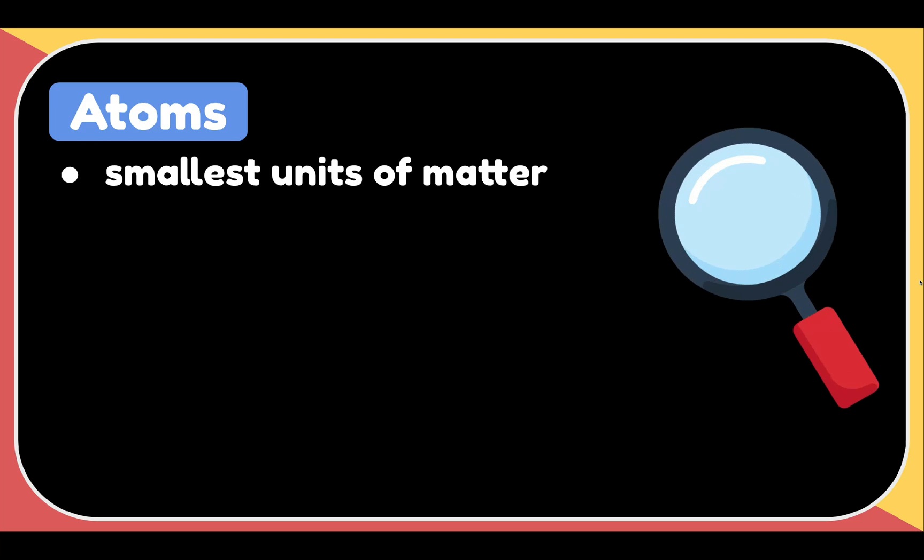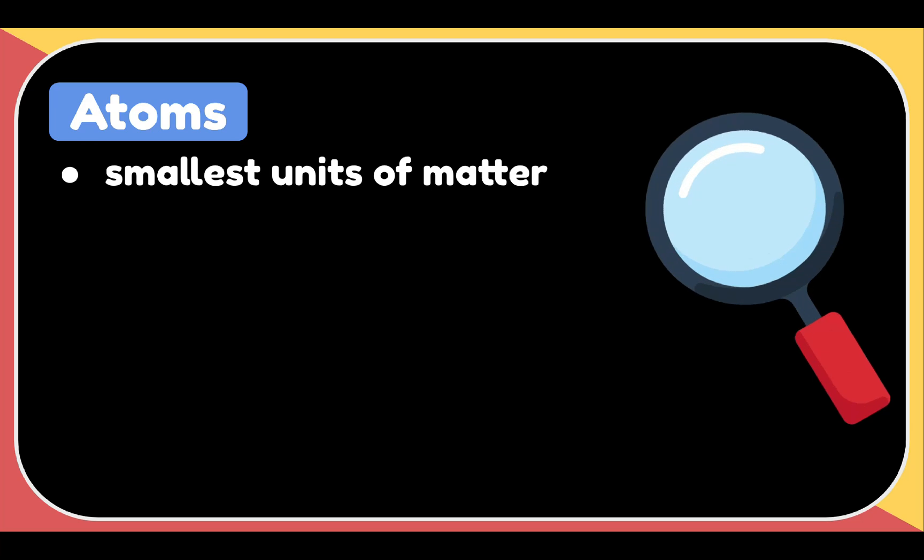So what are atoms? Atoms are the smallest units of matter that have the properties of a chemical element. Atoms are so small that you cannot see them with your eyes or even through standard laboratory microscope.